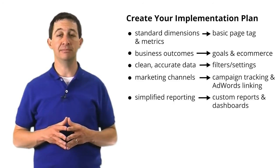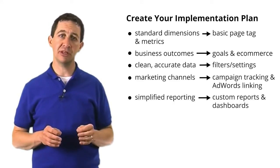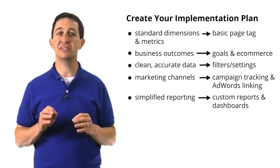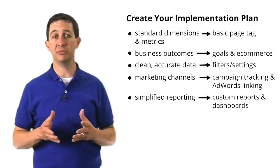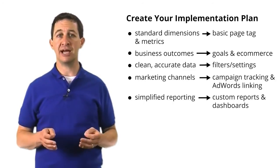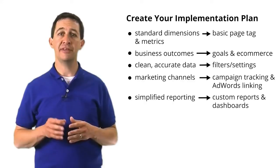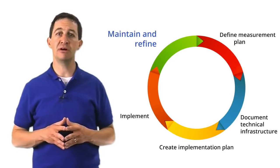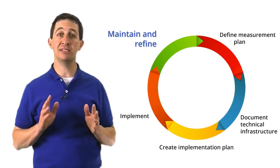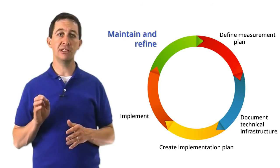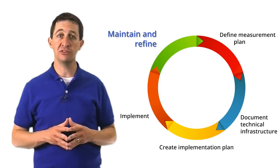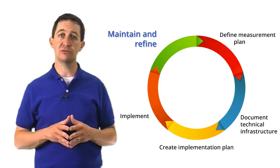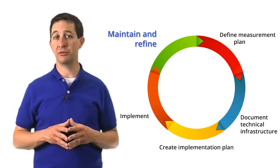Usually, you will combine the measurement plan, technical information, and Google Analytics features into a document that details the implementation recommendations for your business. The result of this process is a reliable, accurate set of data that helps you understand the performance of your business day in and day out. The final step of the measurement planning cycle is to maintain and refine your plan. This is a really important step because your business requirements and your technical environment can change over time. Without a team to maintain your measurement plan, your data won't keep pace with your reporting needs.